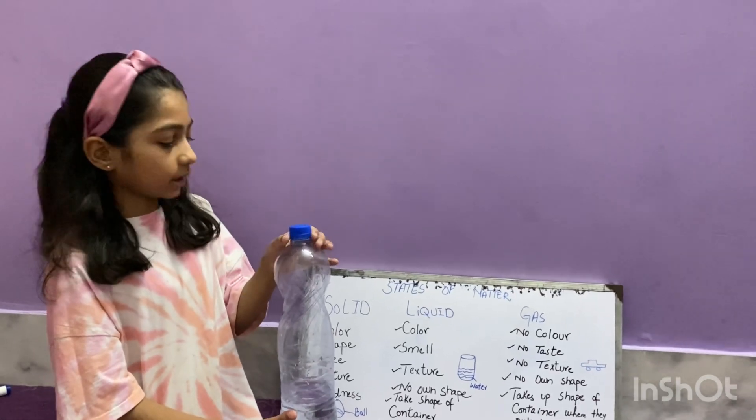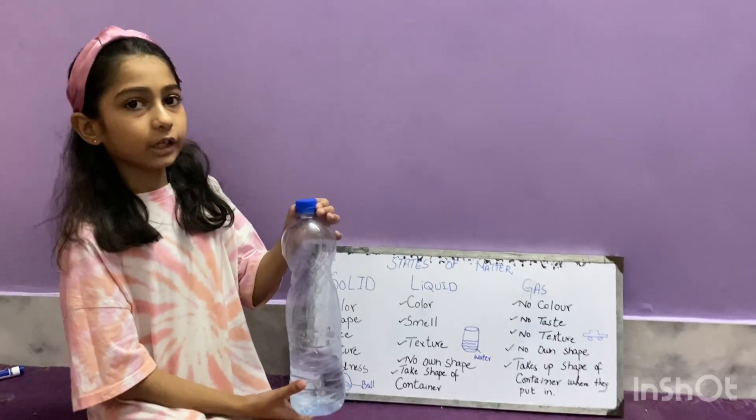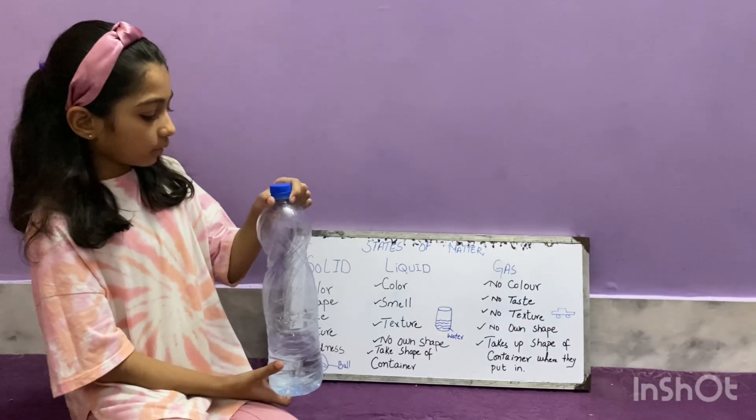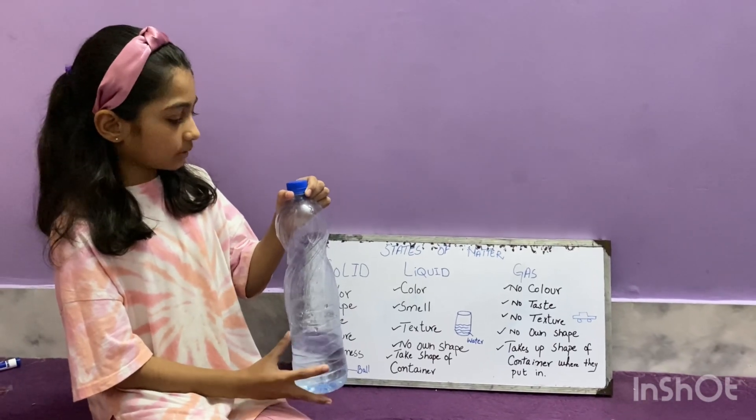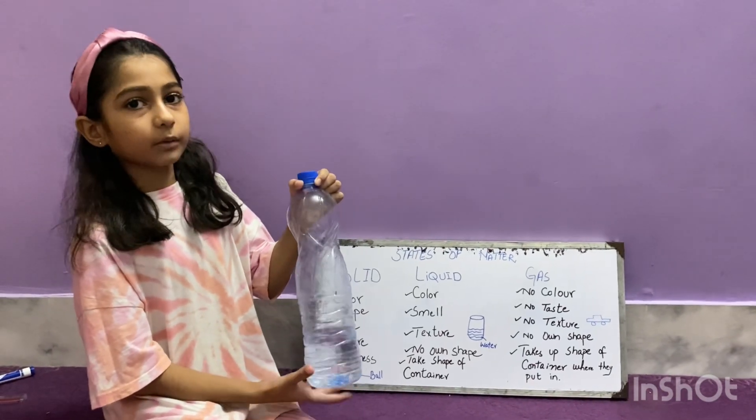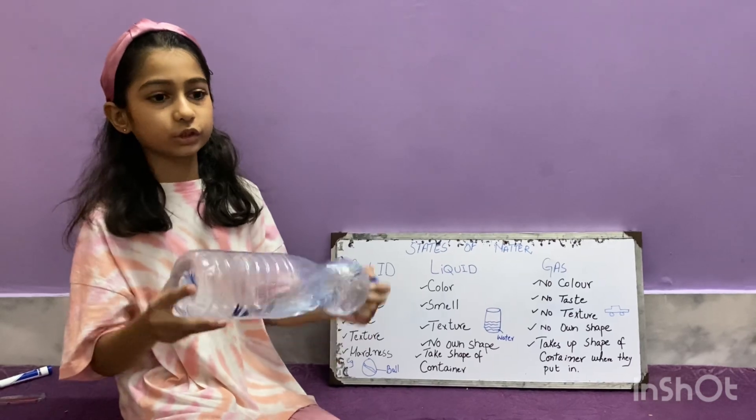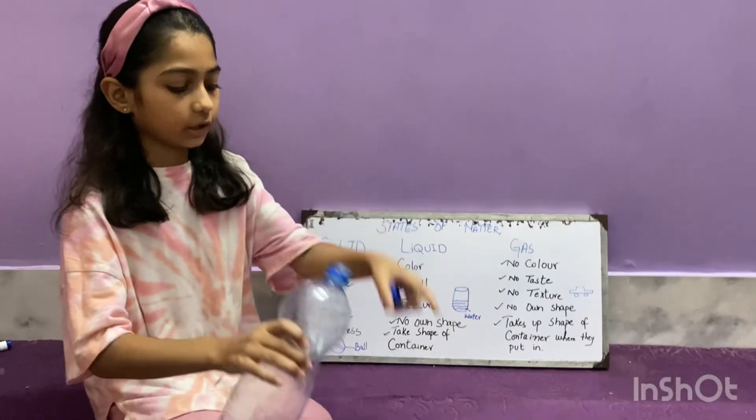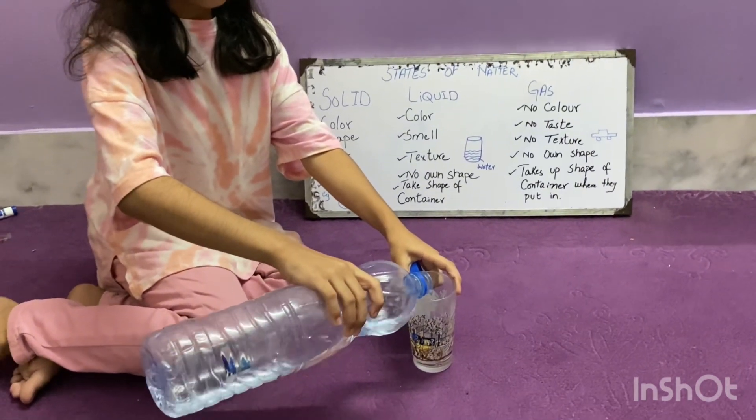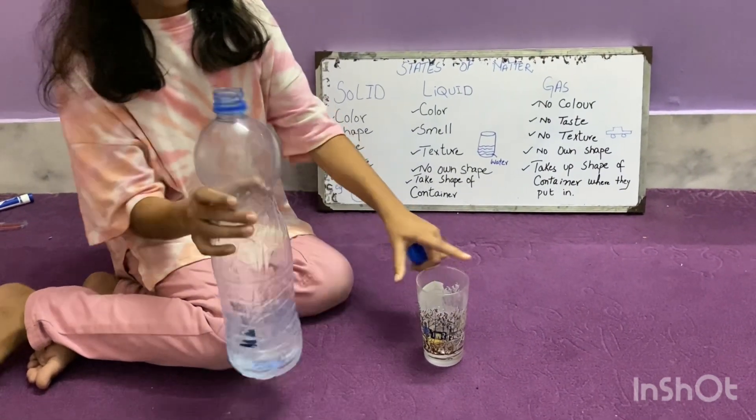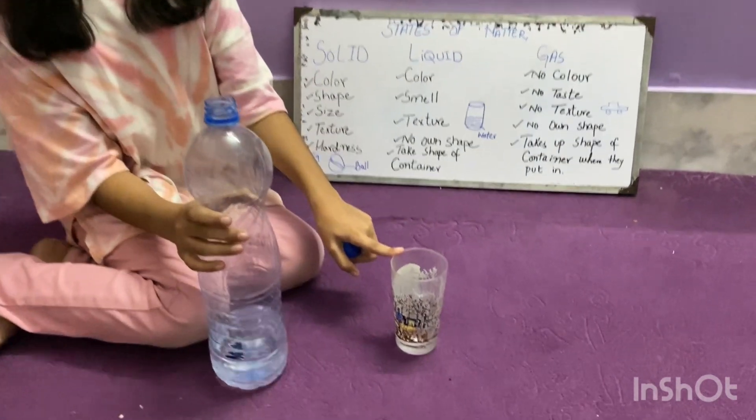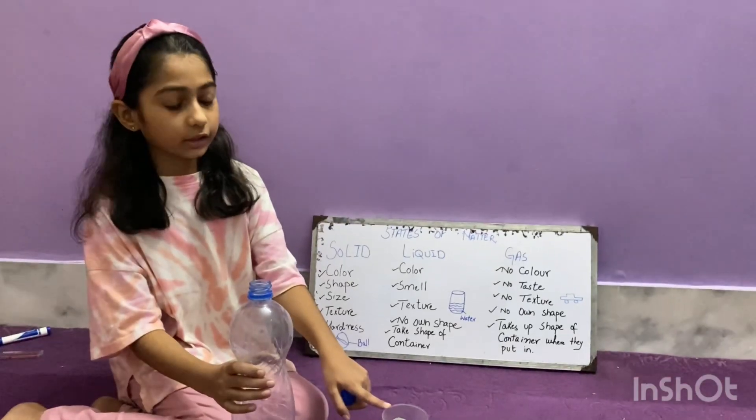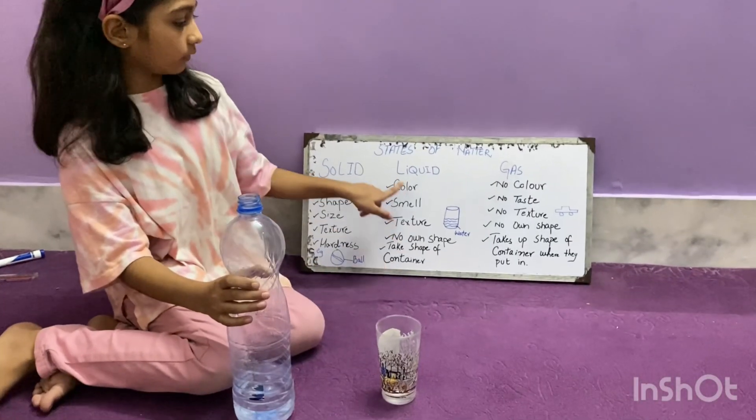Water is an example of liquid. It has its own color, smell, and texture but has no shape. If I pour water in a glass, it takes shape of a glass. It is an example of a liquid.